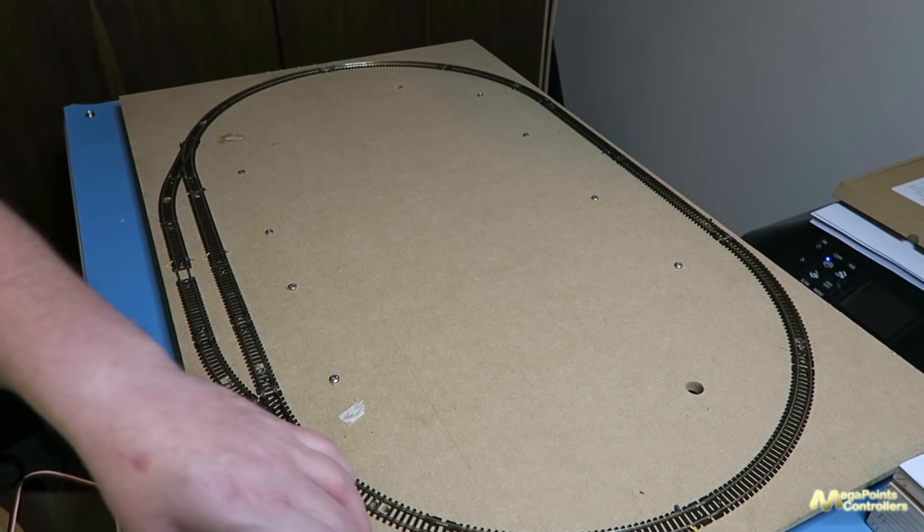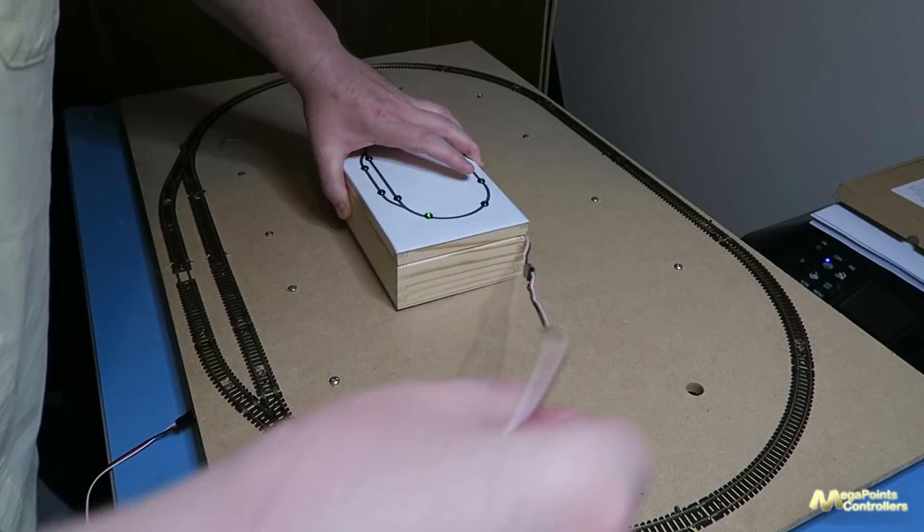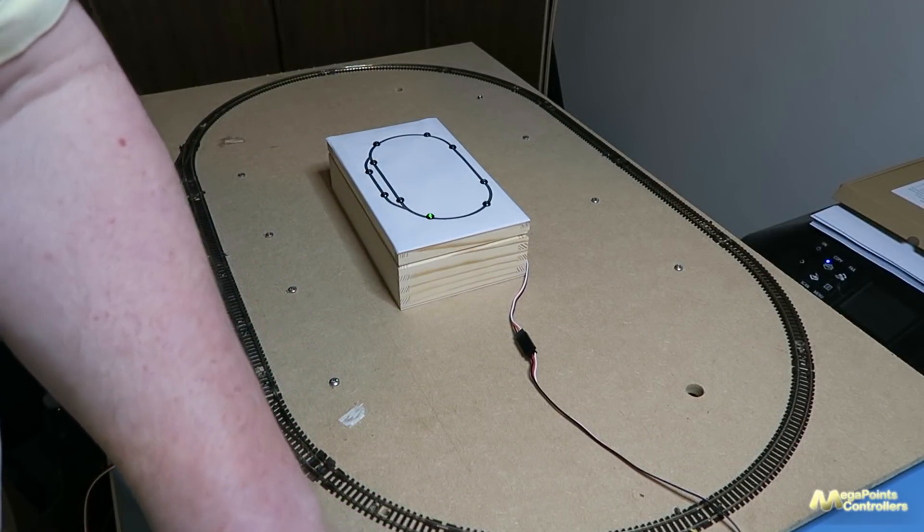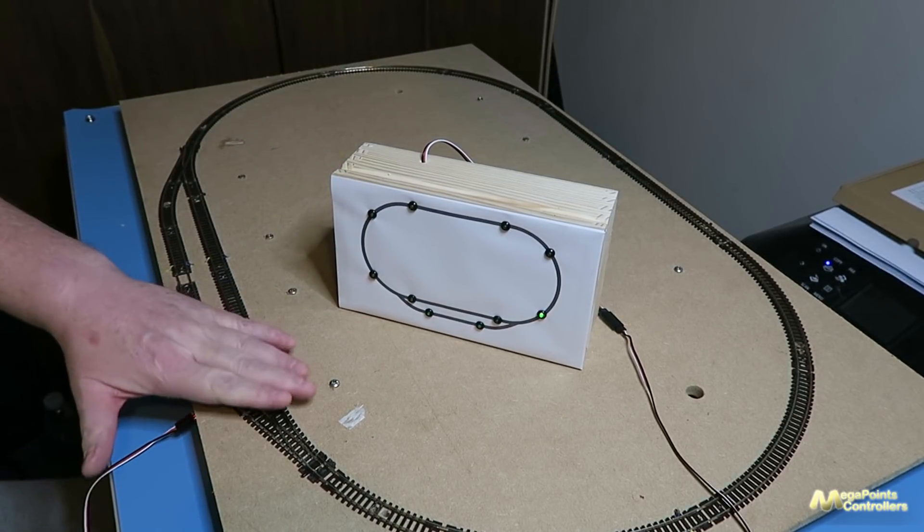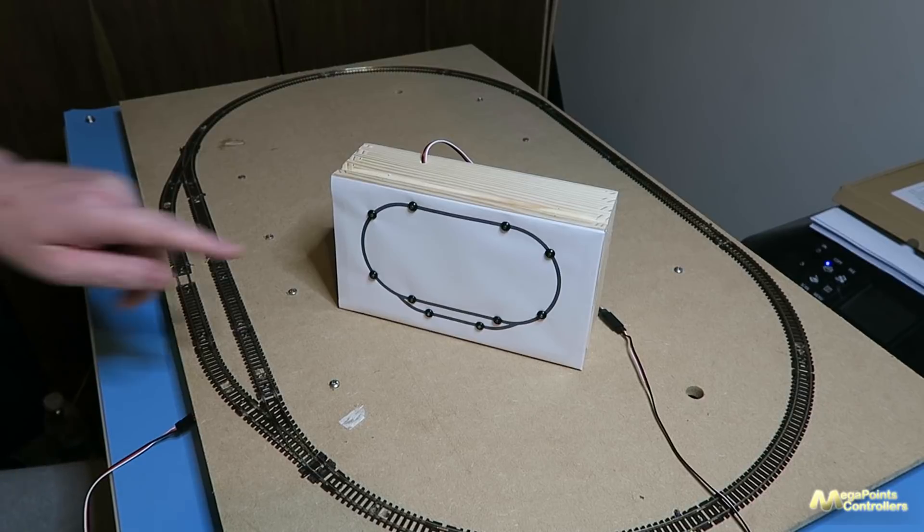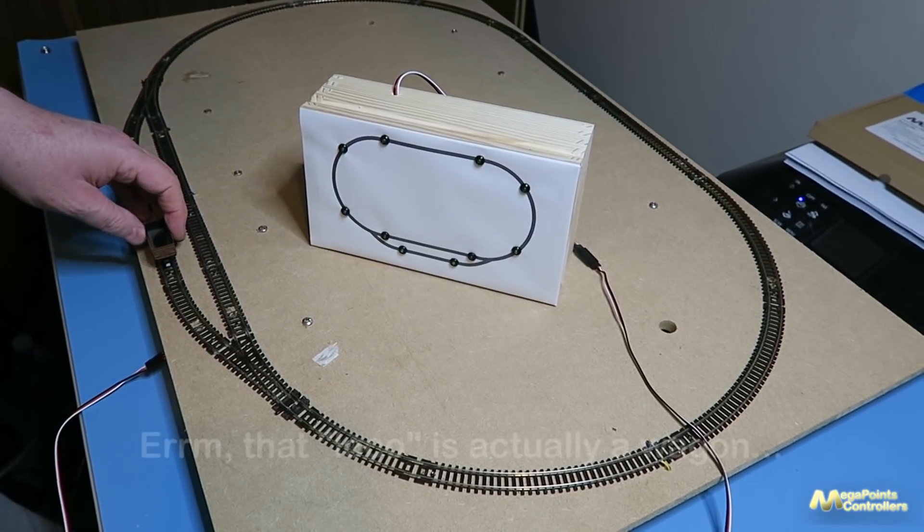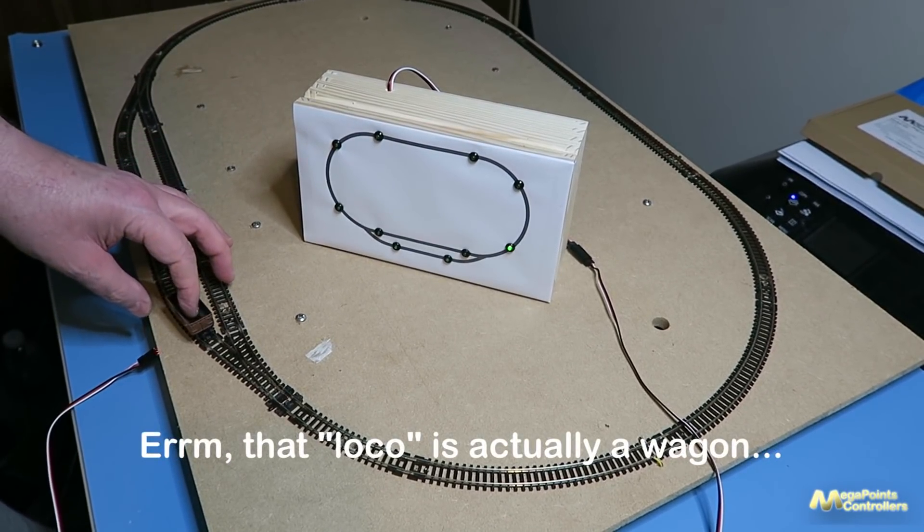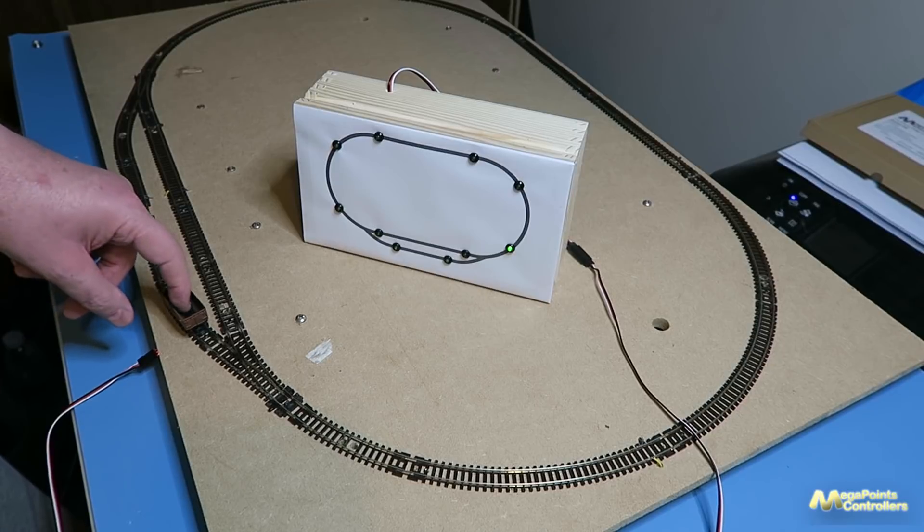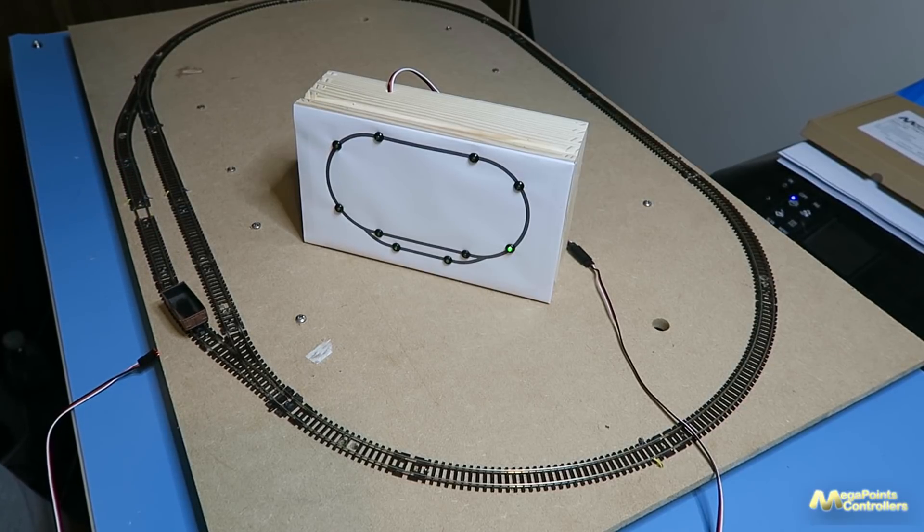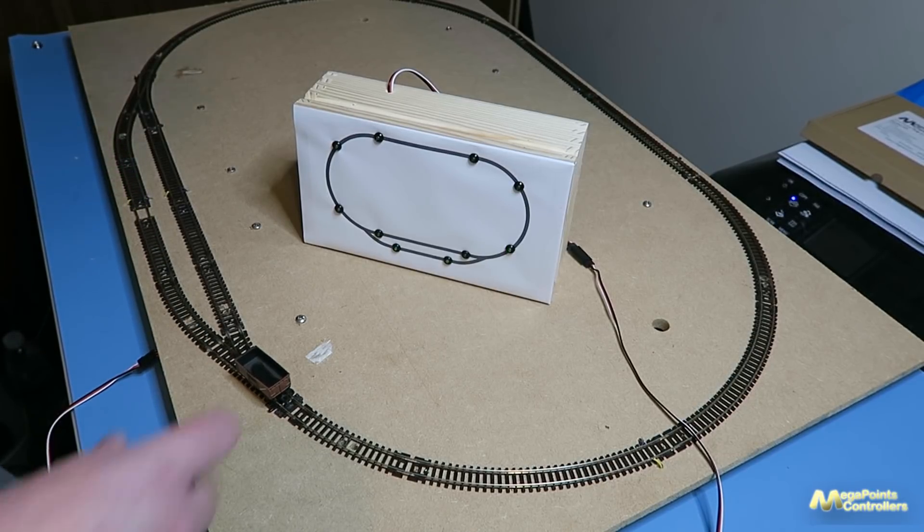Let's bring the feedback module and the Mimic. So the Mimic light is off. I have my small loco here. Let's give it a go. And you can see it's detected it. On and off. It latches for one second when it detects.